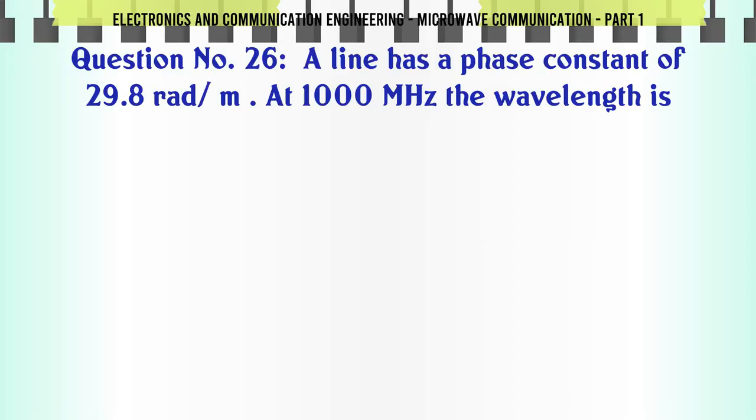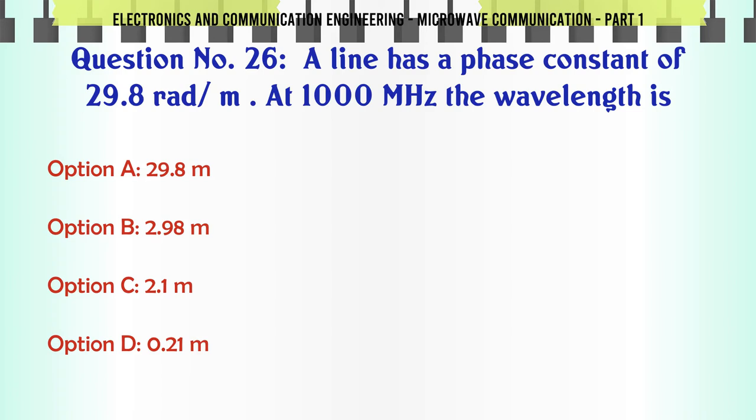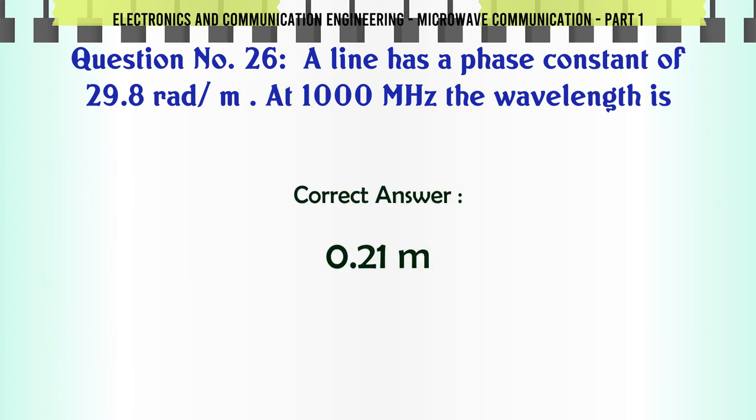A line has a phase constant of 29.8 rad/m at 1000 MHz, the wavelength is: A. 29.8 m, B. 2.98 m, C. 2.1 m, D. 0.21 m. The correct answer is 0.21 m.